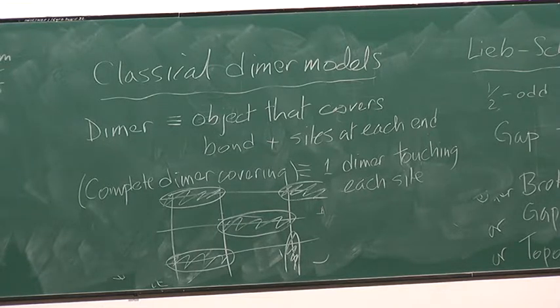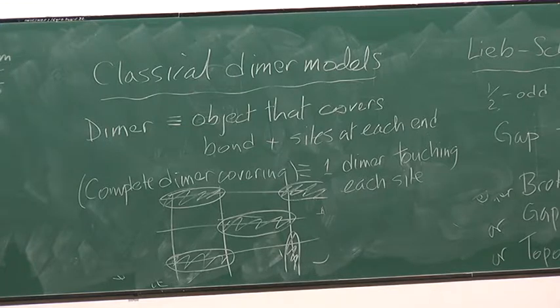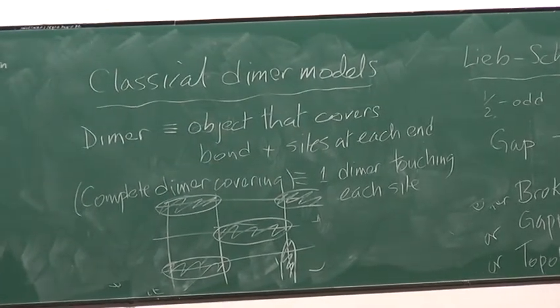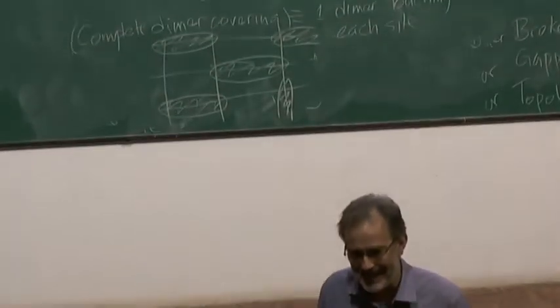People thought about dimer problems before thinking about quantum aspects, and they arise in various situations. One motivation is in surface physics: a crystalline surface absorbing diatomic molecules can represent the absorbed molecules with dimers, describing their coverings with a dimer model. There's also a very direct correspondence with the triangular lattice Ising antiferromagnet via a duality relation.